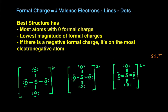To do that, we have to first start by calculating the formal charge of each of the atoms for each of the Lewis structures. To calculate formal charge, you just follow this formula: formal charge equals the number of valence electrons minus the number of dots minus the number of lines around each of the atoms.